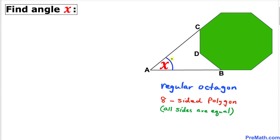Welcome to PreMath. In this tutorial we have a regular octagon as shown in the figure, such that two line segments AB and AC produce an angle X. We are going to find the value of angle X. Keep in mind that a regular octagon is an eight-sided polygon whose all sides are equal in length.